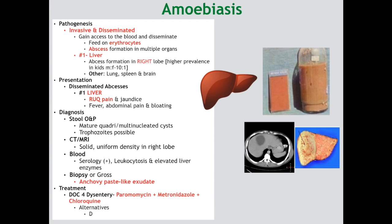For treatment of systemic amoebiasis, all three classes of drugs are used: paromomycin as your luminal agent, metronidazole with its alternatives as your mixed agent, and chloroquine as your systemic agent — with the alternatives for chloroquine being dehydroemetine and emetine. For differential diagnoses, include pathogens that can also cause a liver abscess; most commonly in the parasitic family it will be Echinococcus, though that abscess will be multiloculated. The main bacterial causes are Strep and Staph. Surgery is contraindicated due to the risk of rupture causing acute anaphylaxis, so treatment is solely medicinal.